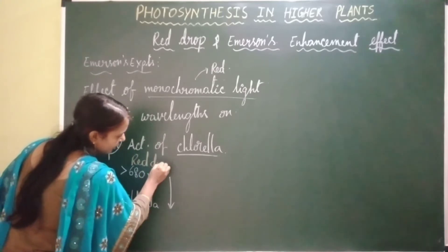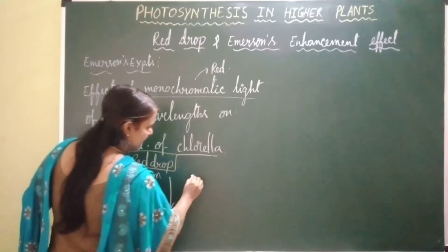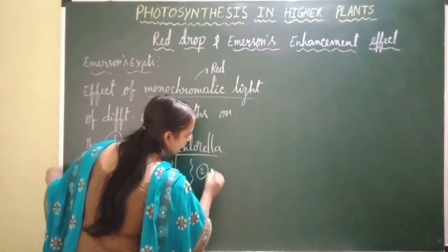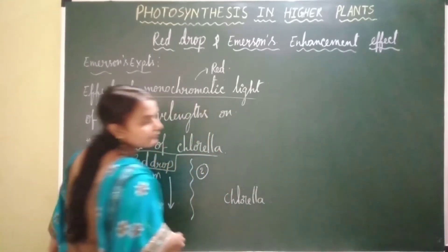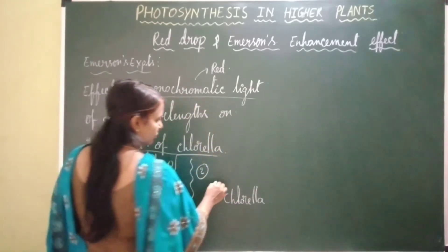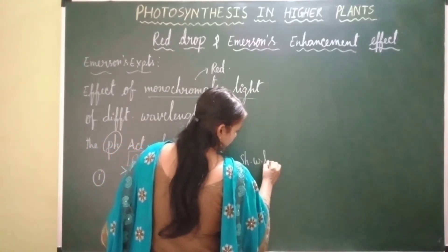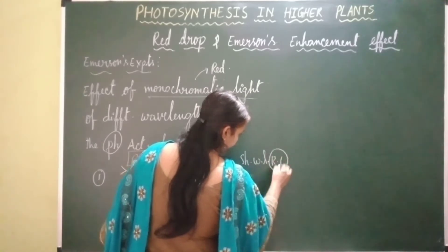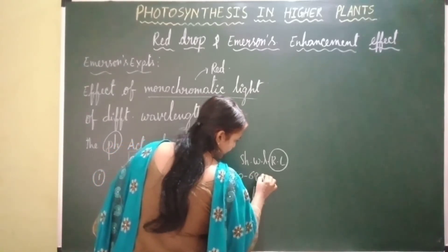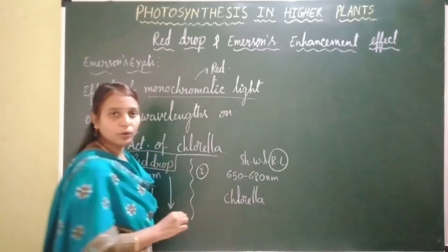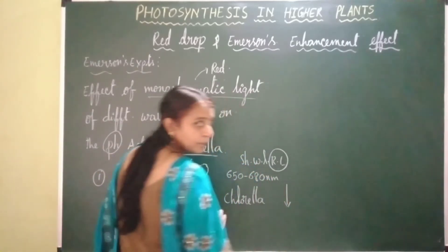In his second experiment, he exposed Chlorella to the shorter wavelength of red light, ranging between 650 to 680 nanometers. He again observed that there is a sharp decrease in the rate of photosynthesis.